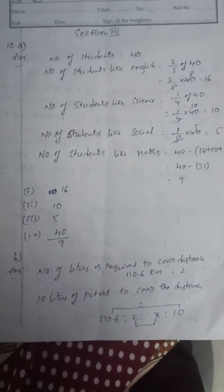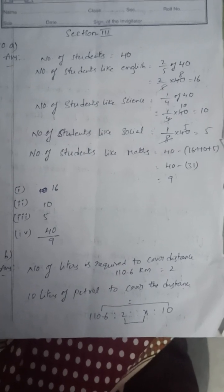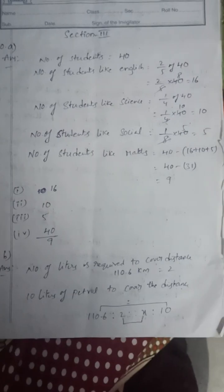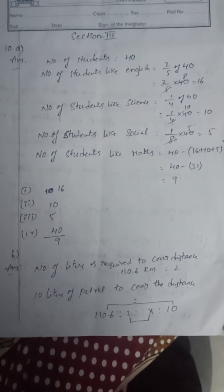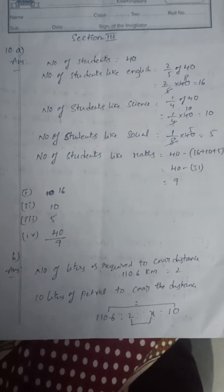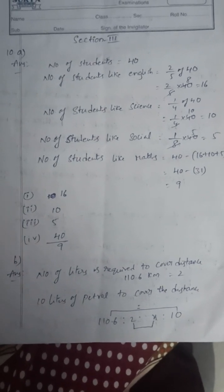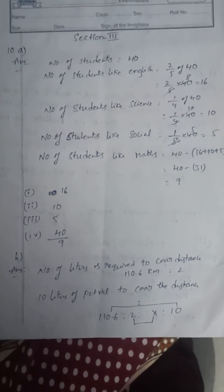Section 3: Number of students is 40. Number of students who like English is 2/5 of the total, that is 2/5 into 40, which is 16. Number of students who like science is 1/4 of 40, which is 10. Number of students who like social is 1/8 of 40, which is 5.